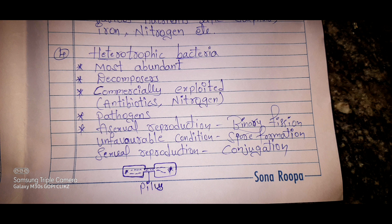Asexual reproduction takes place in heterotrophic bacteria by binary fission — 'bi' means two, 'fission' means divide — a parent cell divides into two daughter cells. In unfavorable environmental conditions, they reproduce by spore formation. Sexual reproduction also takes place: two bacteria come near each other and join via a bridge-like structure, exchanging genetic material. This process is known as conjugation, and the connecting structure is called a pilus.